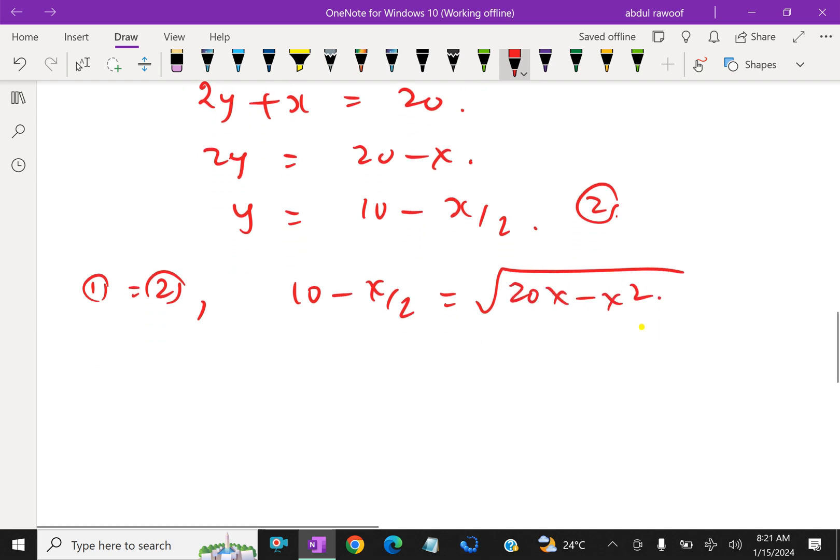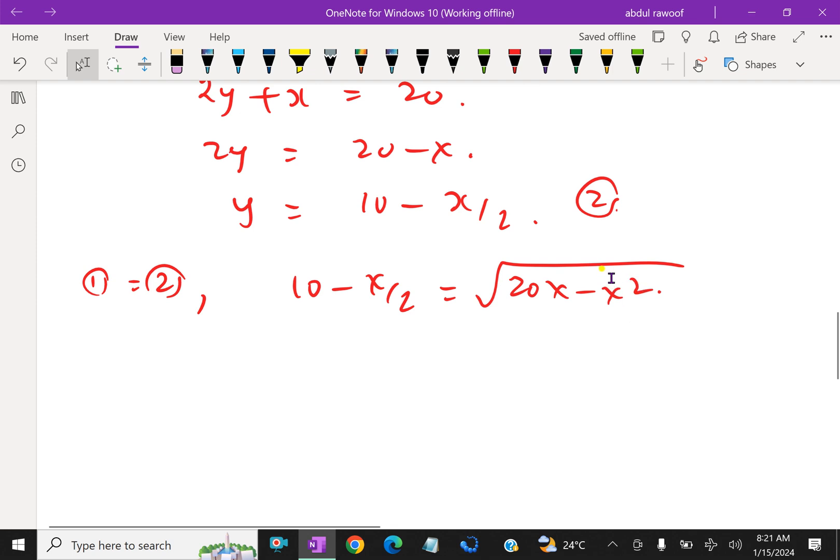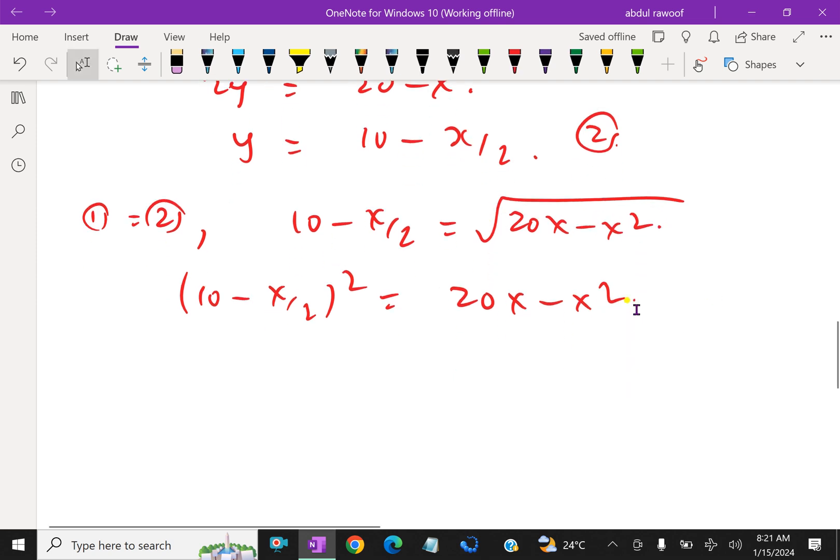Now squaring both to remove the square root. Therefore, 10 minus x by 2 whole squared equals 20x minus x squared. Squaring both sides. So expanding here...